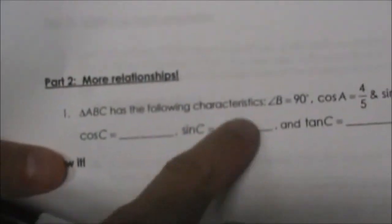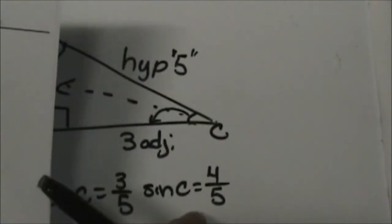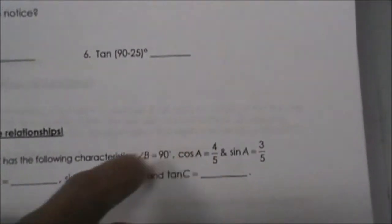Now notice the sine of C is the same as the cosine of A. The cosine of A is 4 fifths and the sine of C is 4 fifths.